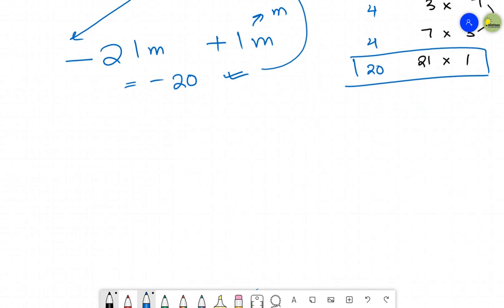So let's write it over here. The given expression was m² - 20m - 21. In its place, the factors I found out are: m² - 21m + m - 21.